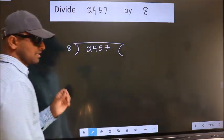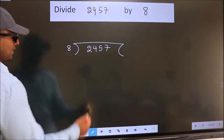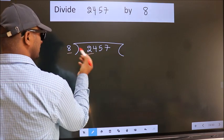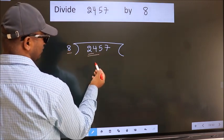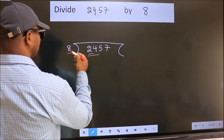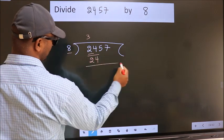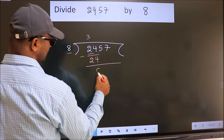This is your step 1. Next, here we have 2. Here 8. 2 is smaller than 8. So we should take 2 numbers, 24. When do we get 24 in 8 table? 8 threes, 24. Now we should subtract. We get 0.